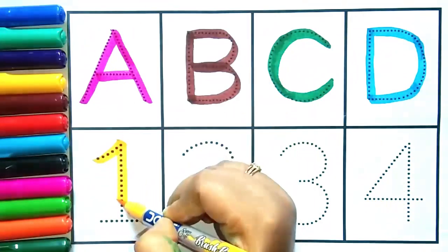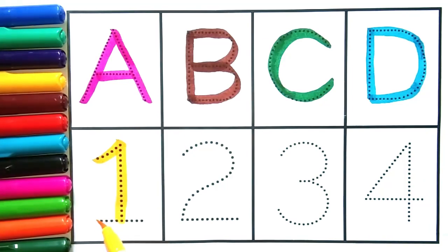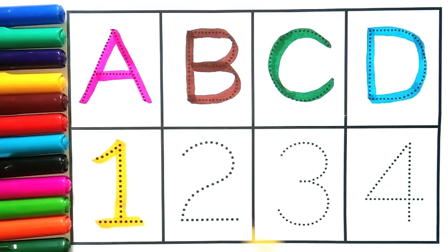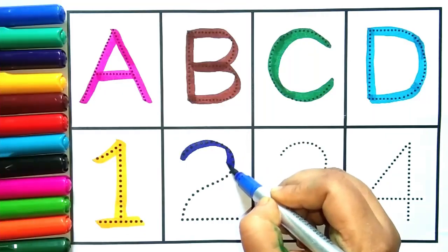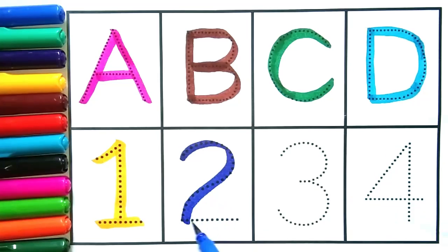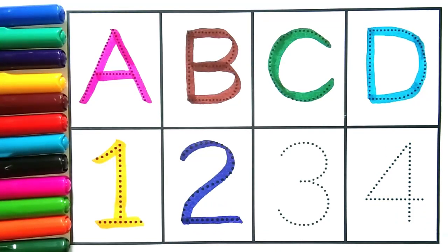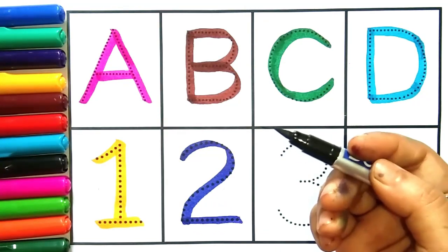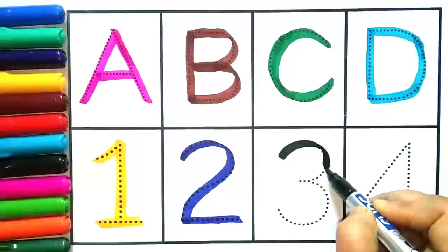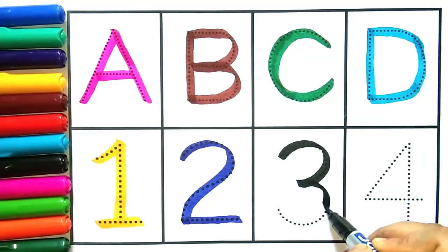Yellow color. One, he is number one. Blue color. Two, he is number two. Black color. Three, he is number three.